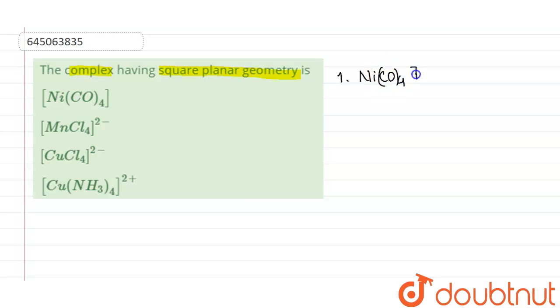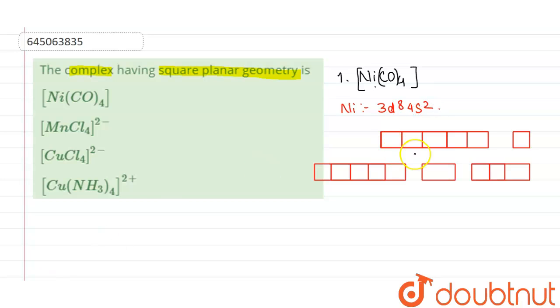So this is the complex that is given to us. The outer electronic configuration of nickel is 3d8 and 4s2. So this is the d orbital and this is the s orbital here. There are 8 electrons, 5, 6, 7 and 8 and there are 2 electrons present here.